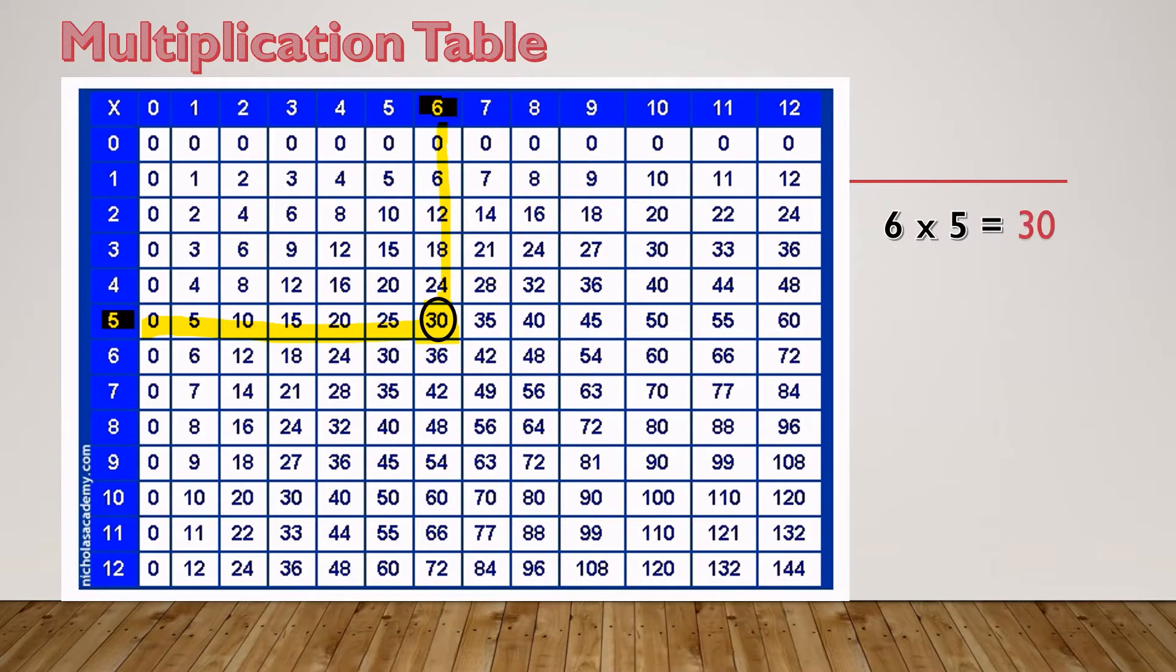Let's do one more. 9 times 3. Try pausing the video and see if you can find the answer on our multiplication table. So again, you're going to start with 9 and 3. Draw a line down from 9 to 3 and from 3 to 9. And 27 is our answer. 9 times 3 is 27.